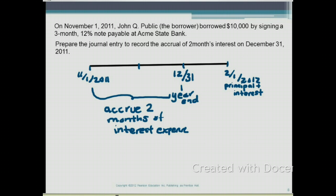That two months of interest exists because we borrowed money on November 1 and have used it for two months, so we have an interest expense associated with that. Even though the interest is only payable at the end of February, we still have to recognize it as an expense in our financial statements. That is what accrual means.